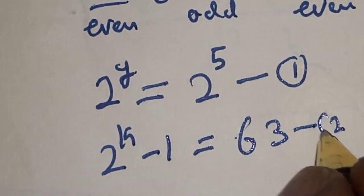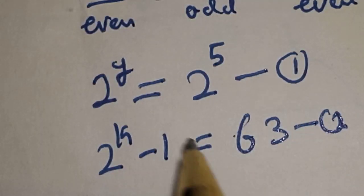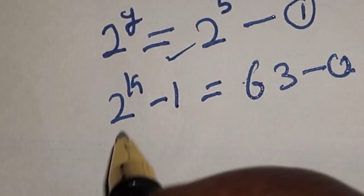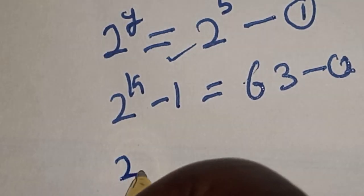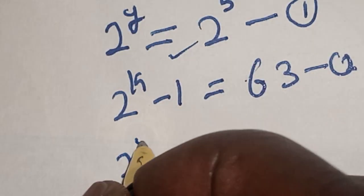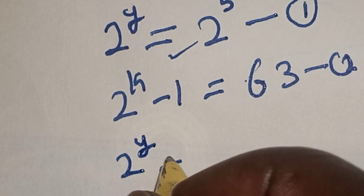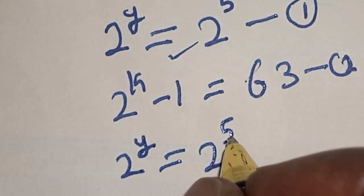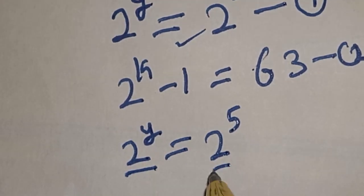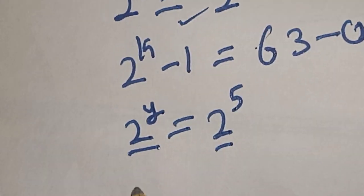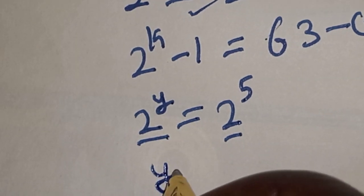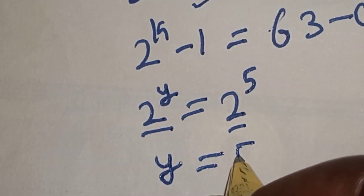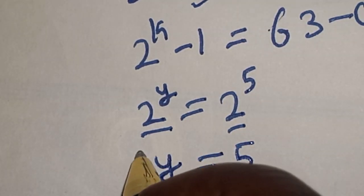Working with equation 1: 2 raised to power Y equals 2 raised to power 5. Since they have the same base, Y equals 5. That is the value of Y.